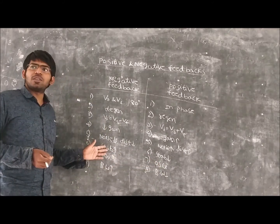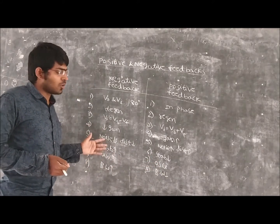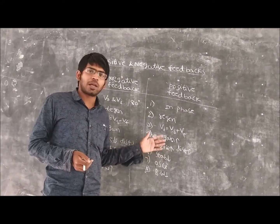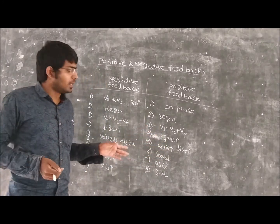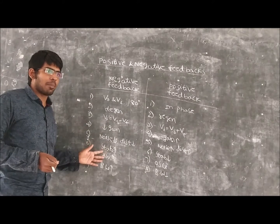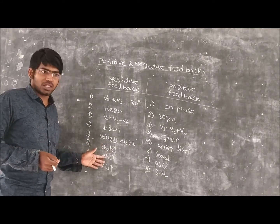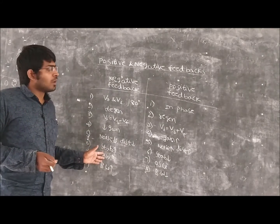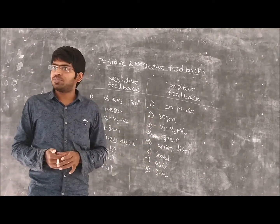The stability of the negative feedback amplifier is very good, whereas the stability of a positive feedback amplifier is very poor. The application of negative feedback amplifiers is amplifying signals, while positive feedback is used for oscillators.